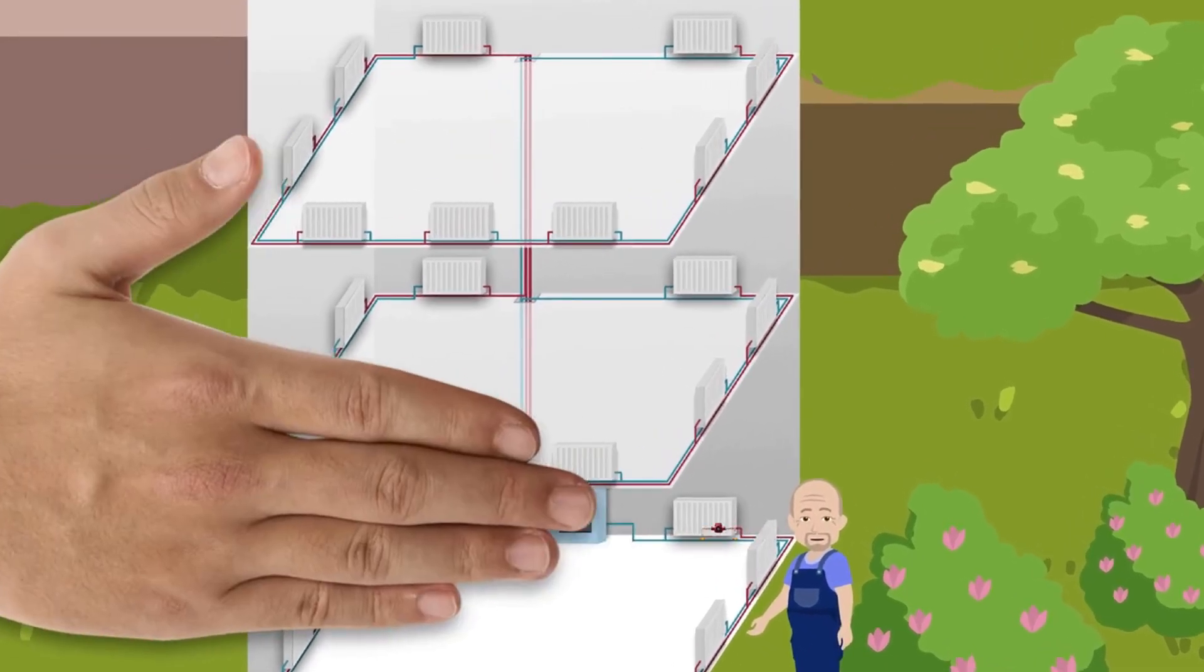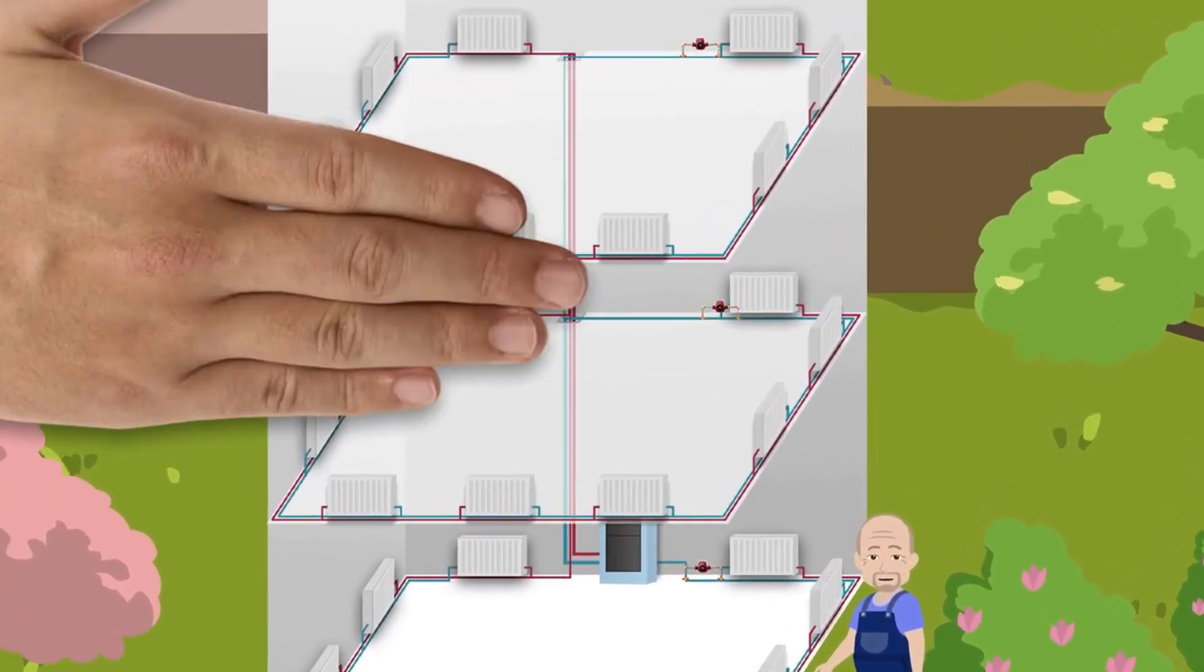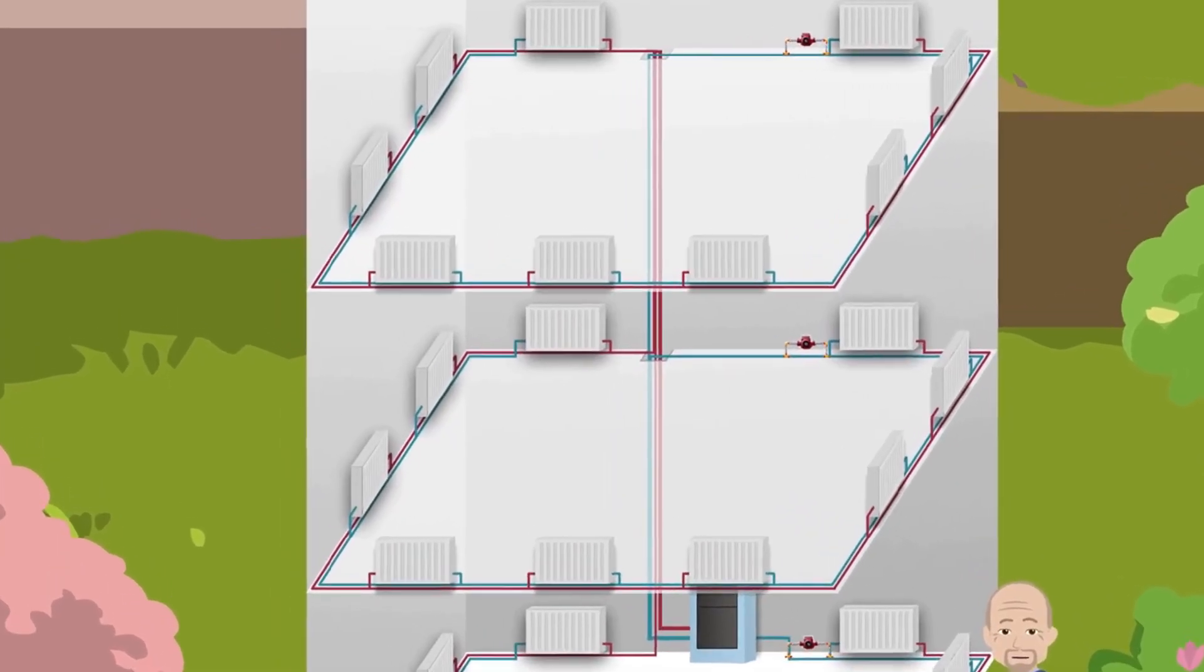Even so, here's a piece of advice. If possible, each floor should be connected using a separate pipe with a separate circulation pump.